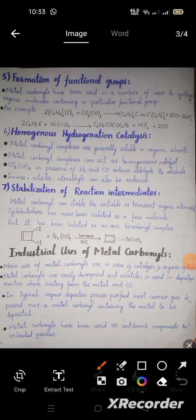Metal carbonyl complexes can act as homogeneous catalysts. Dicobalt octacarbonyl in the presence of hydrogen and carbon monoxide reduces aldehydes to alcohols. Imines and nitroalkenes can also be reduced using these metal carbonyl catalysts.